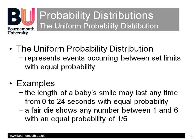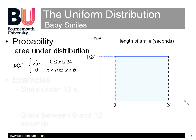An example of a discrete process is the throwing of a fair die that we introduced probability with in the first clip. This slide shows a graph of a continuous uniform probability distribution for baby smiles. The probability density function f is plotted against the random variable x, which can in this case take a value of baby smile length between 0 and 24 seconds.